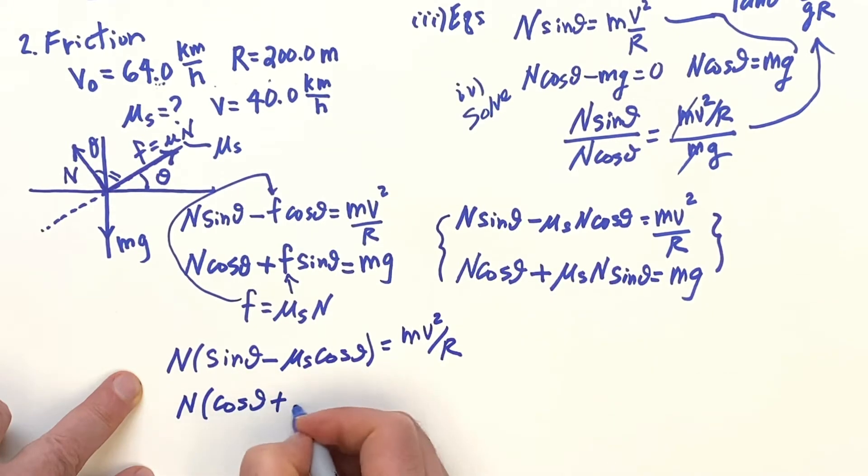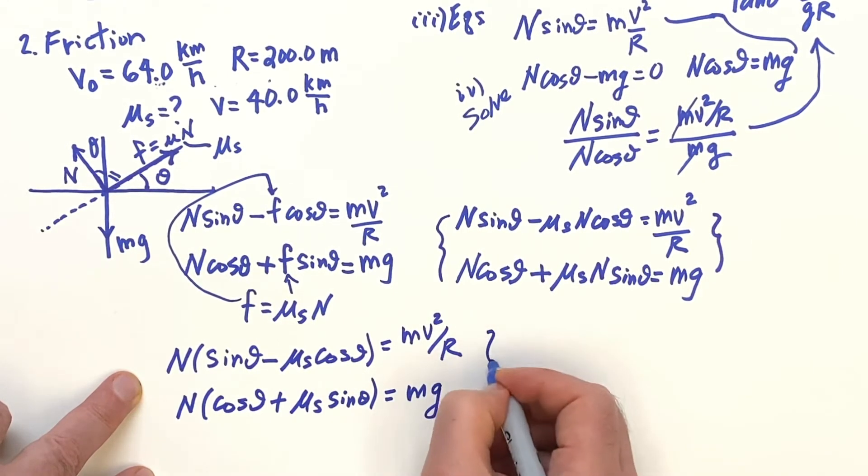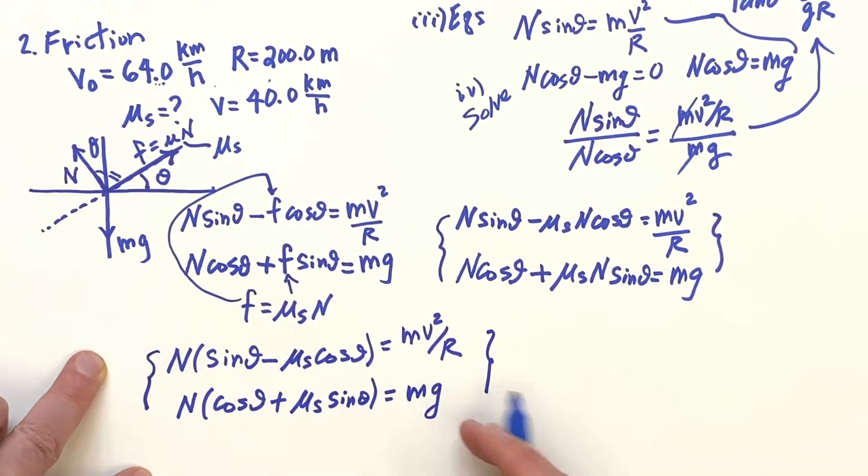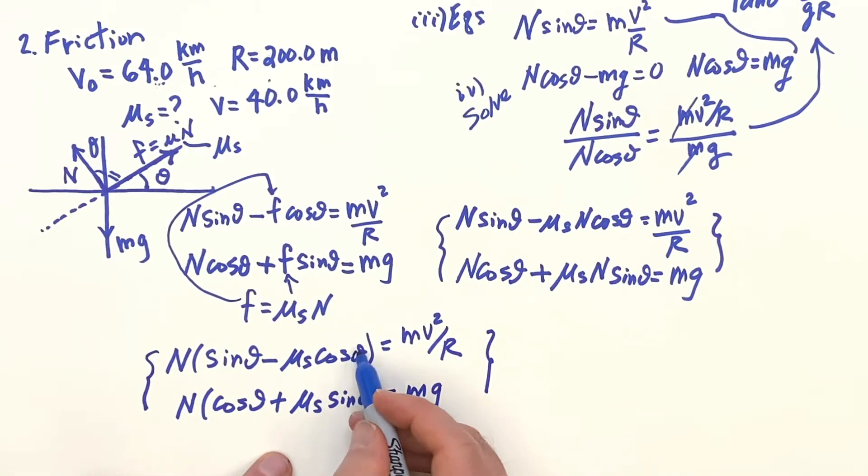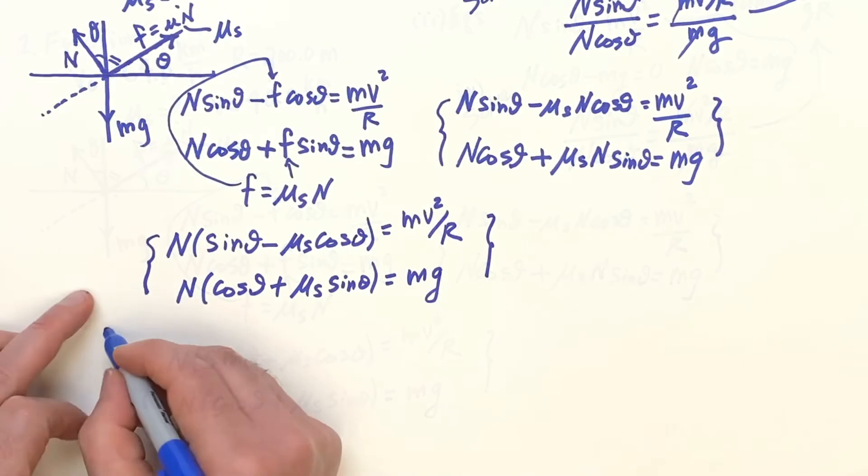sine of theta minus Mu, S, cosine of theta equals M, V squared over R and then N cosine of theta plus Mu, S sine of theta is M, G. And I'll go ahead and bracket these like my friend used to do, keep track. As you look back later, a week later, you can see that we're working with a pair here. And now we're going to divide,